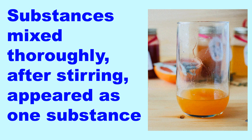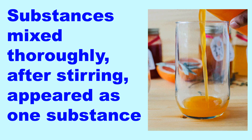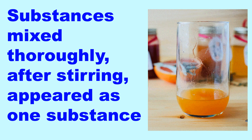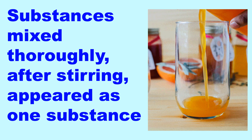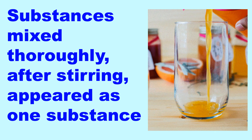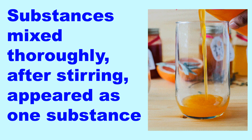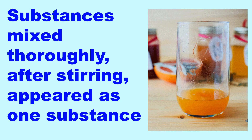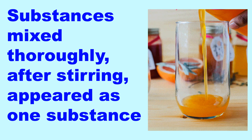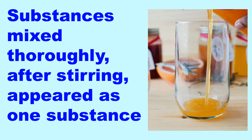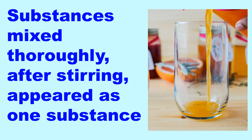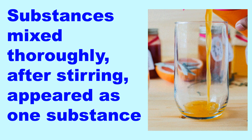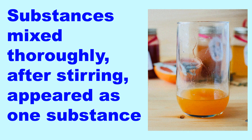In a solution, substances are mixed thoroughly. After stirring, it appears as one substance — you can no longer distinguish one component from another. For example, when you mix water and juice powder, you cannot identify the juice powder because it's already dissolved in the water.